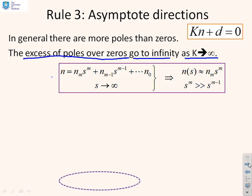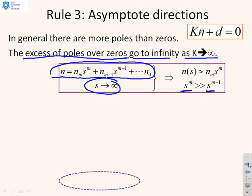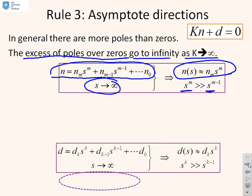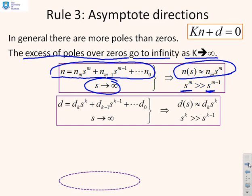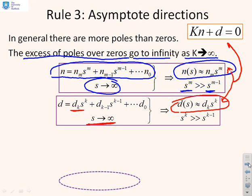First, we write this expression here. Look at the numerator — we can write the numerator as a polynomial: N equals Nm·S^m plus Nm-1·S^(m-1) and so on. Now if we assume that S is going to infinity, then S^m is much, much bigger than S^(m-1), and therefore this numerator can be approximated just by the maximum power. Similarly for the denominator, with order k, the maximum power is S^k, and D(S) is approximately dk·S^k.